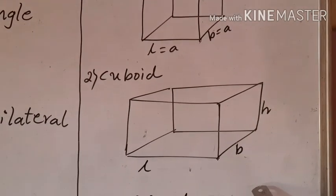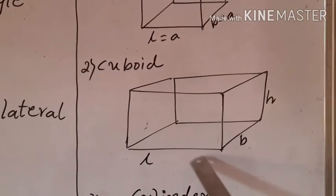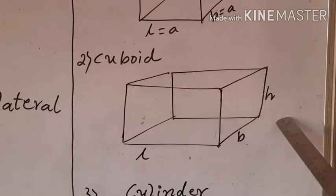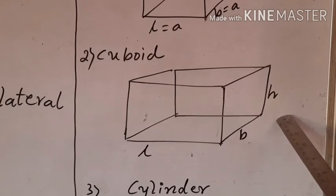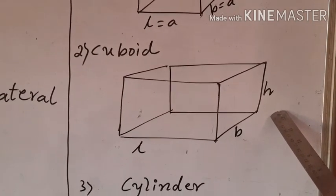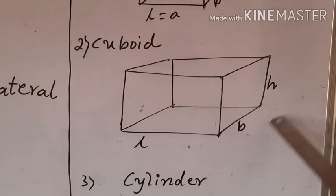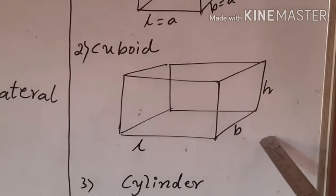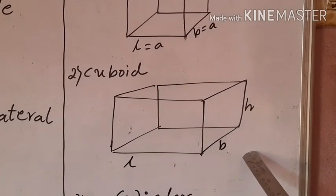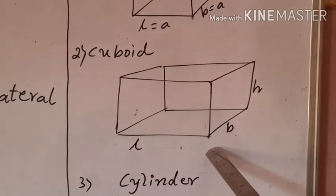Next comes cuboid. Cuboid is also a 6-faced figure in which length, breadth, and height — all three dimensions — are present, so it is a 3D shape. But here, the length, breadth, and height are not equal to each other. That is why the faces are not square-shaped but rectangle-shaped. Such a figure is called cuboid.